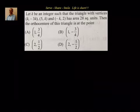The orthocenter is the point of intersection of altitudes. So our first step is to find out the value of k by equating the area to 28 square units. Let us do that.